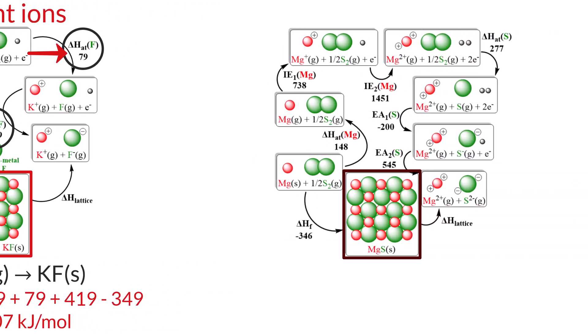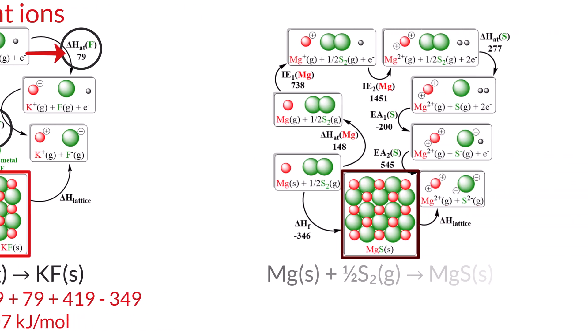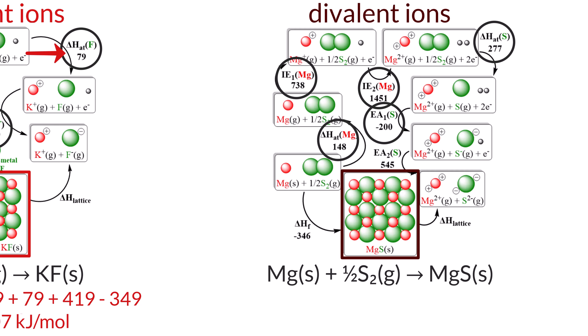Next, consider MgS or magnesium sulfide with the formation reaction of magnesium plus one-half S2 going to MgS. The given data include the enthalpy of atomization of magnesium at 148 kJ per mole, first ionization energy of magnesium at 738 kJ per mole, second ionization energy of magnesium at 1451 kJ per mole, the atomization of sulfur at 277 kJ per mole, first electron affinity of sulfur at negative 200 kJ per mole, second electron affinity of sulfur at 545 kJ per mole, and the formation of MgS of delta HF equals negative 346 kJ per mole.